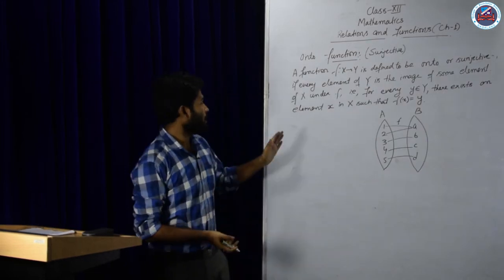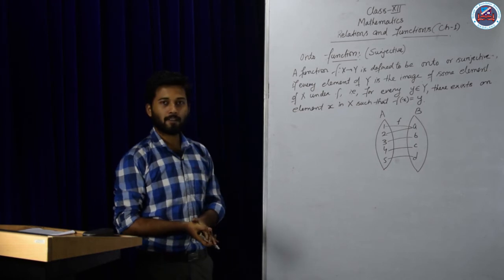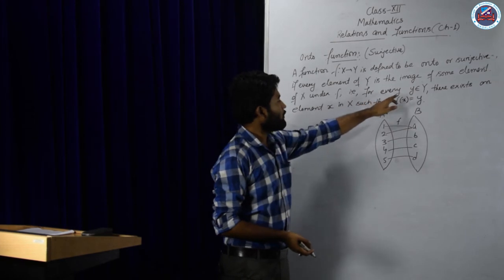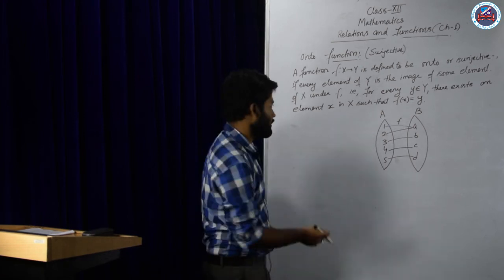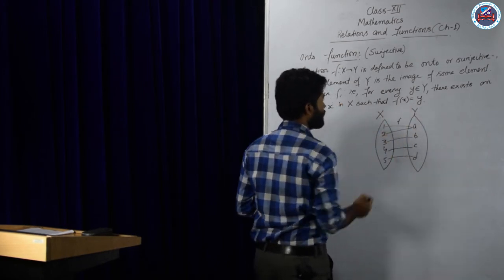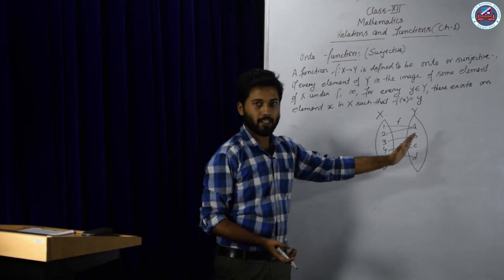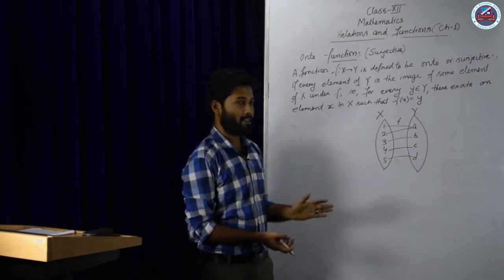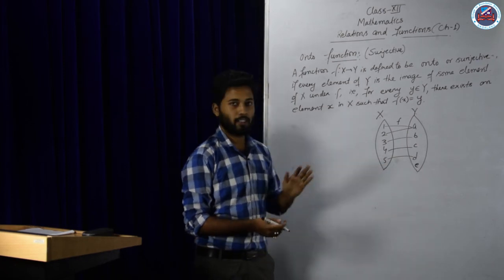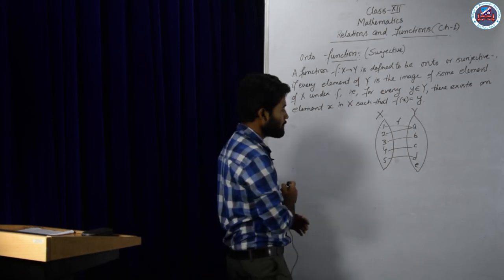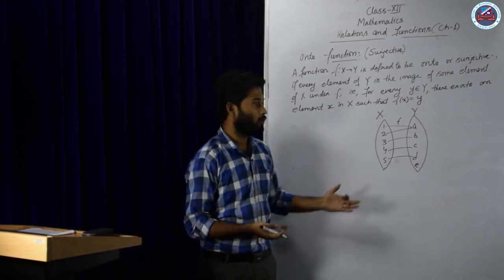Next, onto function. A function f from X to Y is defined to be onto or surjective if every element of Y is the image of some element of X under f. That is, for every y belonging to Y, there exists an element x in X such that f(x) = y. This means every element of Y must be associated with at least one element of set X, and there should not be any element remaining that is not connected to any element of set X. If there is such an element left unconnected, that type of function is called an into function.